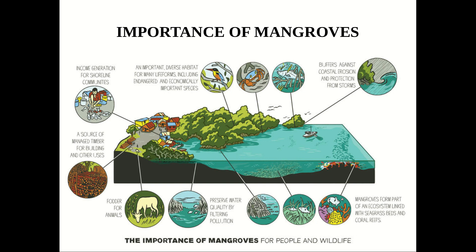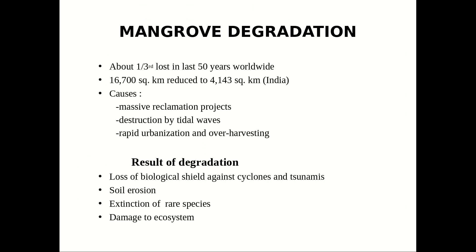Moving to the next slide — Mangrove Degradation. As we all know, one-third of our mangroves have been lost in the last 50 years. There are many causes, which include massive reclamation projects, destruction by tidal waves, and one of the major causes is rapid urbanization and over-harvesting. Results of degradation include soil erosion and drastic damage to the ecosystem.